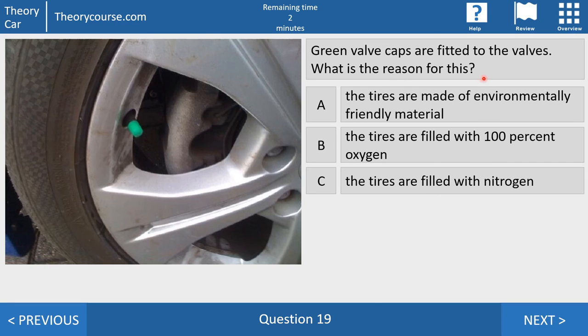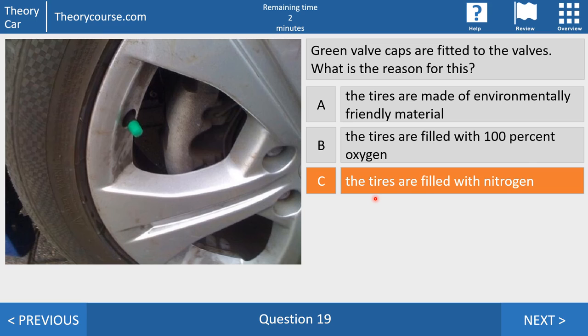Question 19. Green valve caps are fitted to the valves. What is the reason for this? Answer A. The tires are made of environmentally friendly material. Answer B. The tires are filled with 100% oxygen. Answer C. The tires are filled with nitrogen. The garage put green valve caps on the valves. And they say the air won't go out the tires so fast. But you pay 5 euros per tire. So no reason to do this. And environmentally friendly material. This? Don't think so. And 100% oxygen. That's what you get in the hospital. So answer C. Right answer.